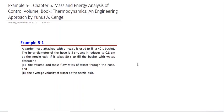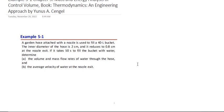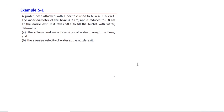Hello guys, assalamu alaikum. Today we are going to solve an example from chapter number five, which is about energy analysis and mass analysis of control volume. This example is from the Thermodynamics: An Engineering Approach book by Yunus A. Çengel, and we will do it to understand the phenomena regarding mass flow rate and volume flow rates.